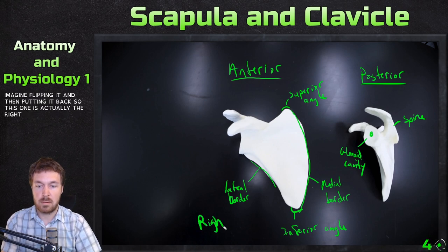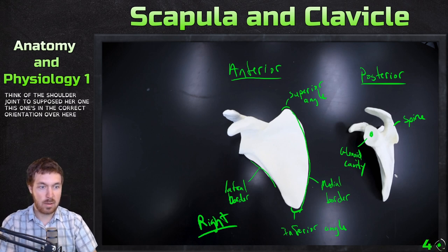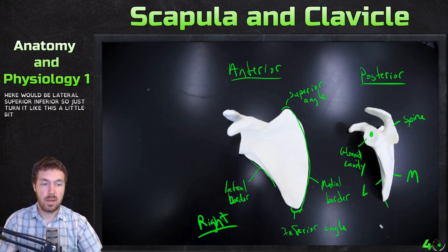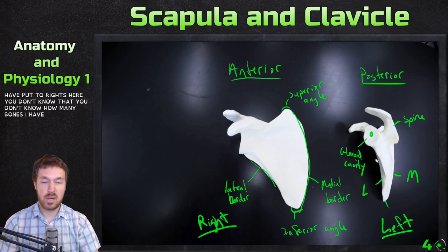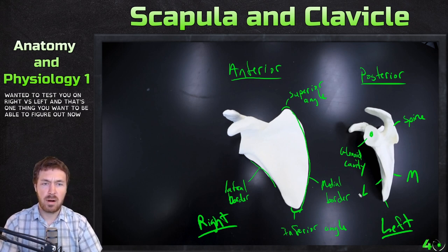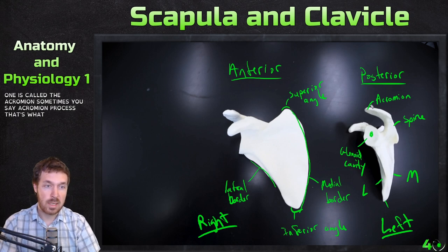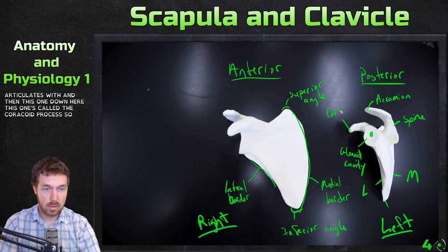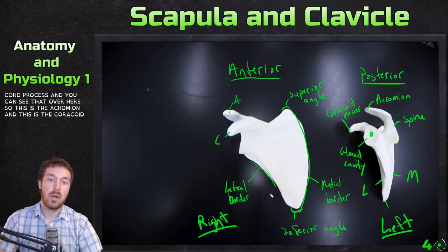With the posterior view in the correct orientation, medial is here, lateral is here, superior and inferior are oriented accordingly. This one is the left scapula. Now there are a few structures we haven't labeled yet — the large processes sticking off. The one that comes off the spine is called the acromion, sometimes called the acromion process. That's what the acromial end of the clavicle articulates with. This one down here is called the coracoid process.